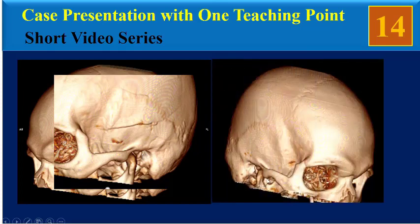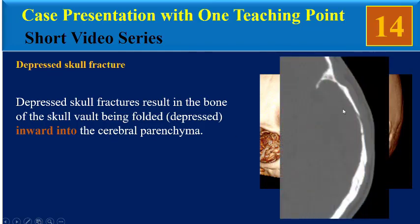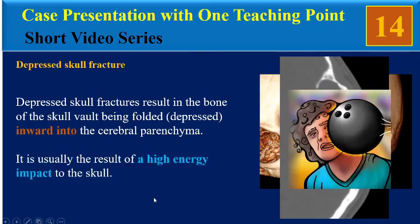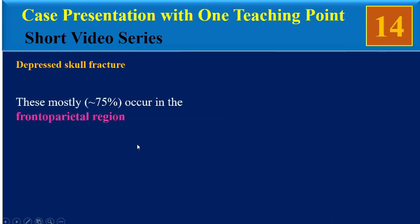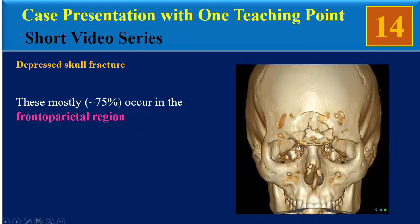And this is the right side of the skull for comparison to left side. Depressed skull fractures result in the bone of the skull vault being folded depressed inward into the cerebral parenchyma. It's usually the result of high energy impact to the skull. These fractures mostly, about 75%, occur in the frontoparietal region.